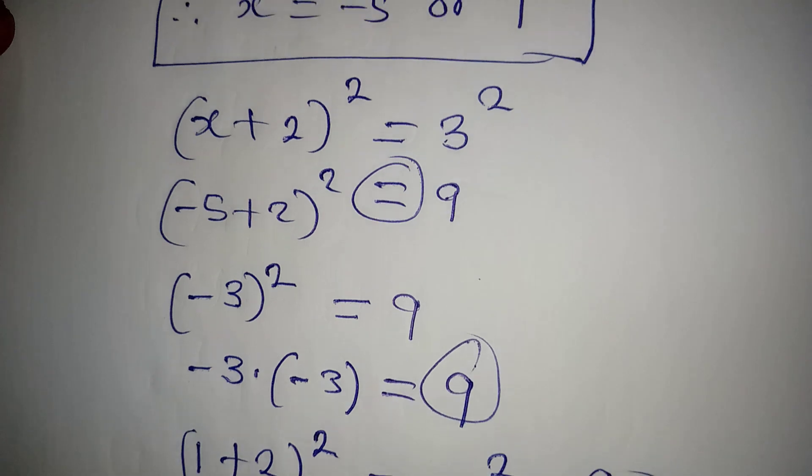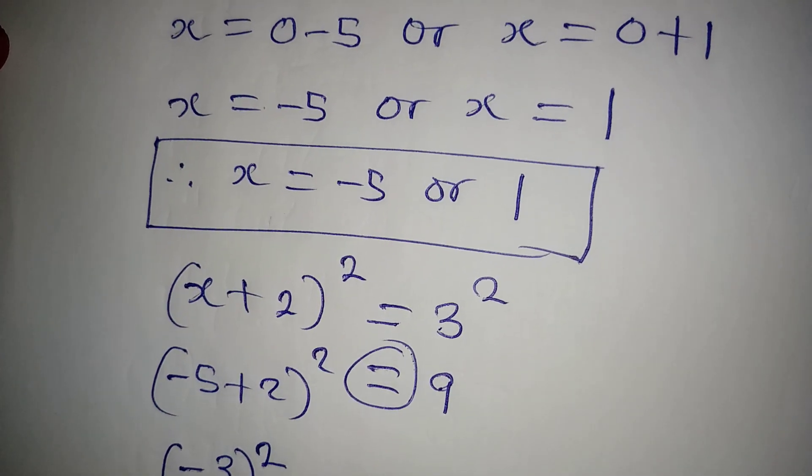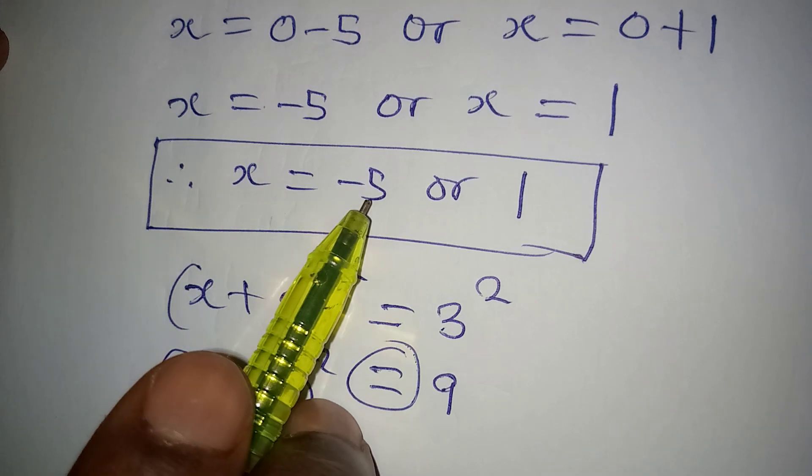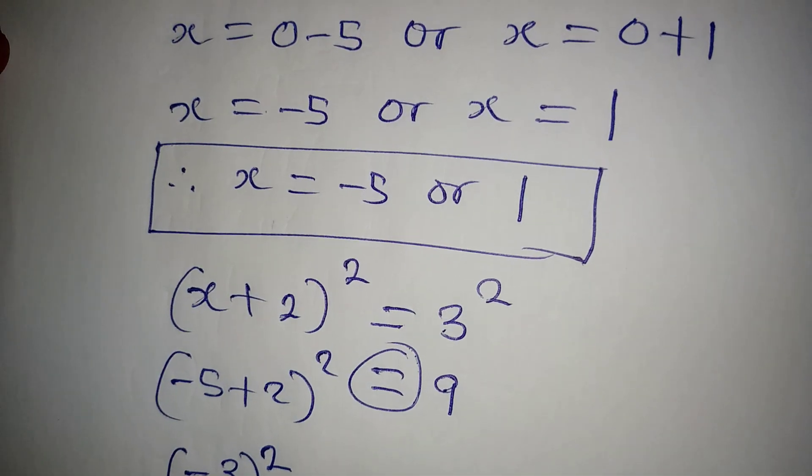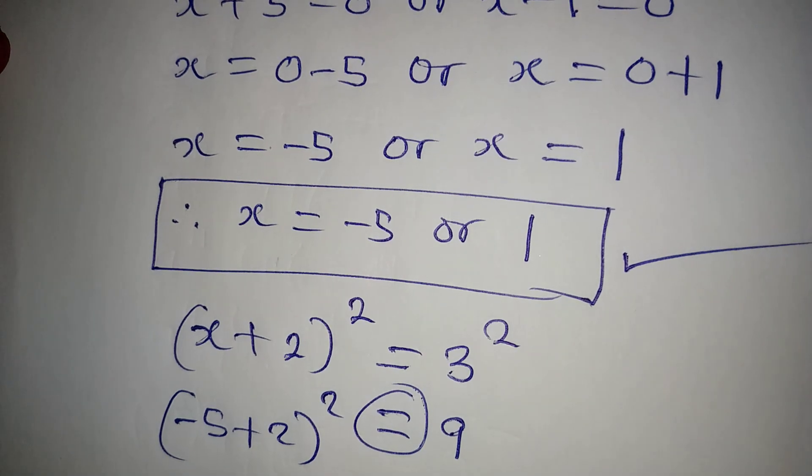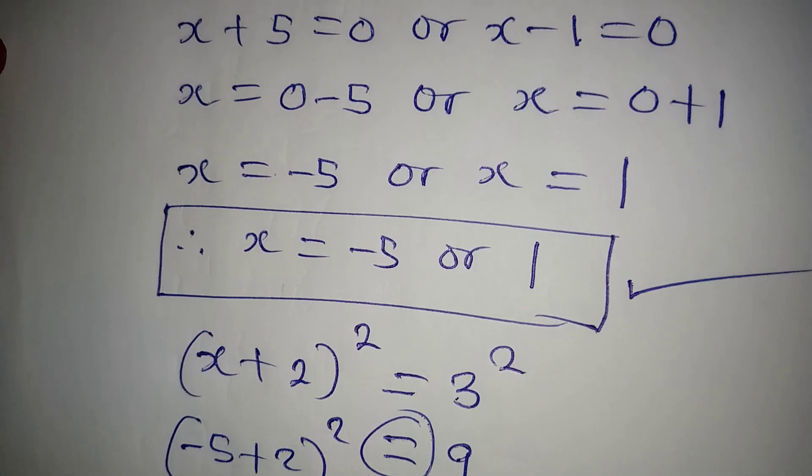But using the difference of two squares, we get two values of x, which are x to be equal to minus 5 or 1. So this is what you are expected to do if you are to solve it completely. Thank you for watching.